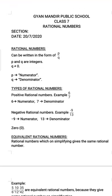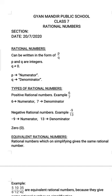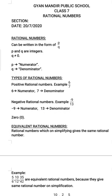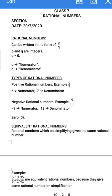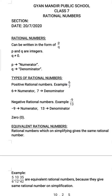Coming to the types of rational numbers — fractions and rational numbers are similar but fractions are only positive, as fractions deal with counting. But rational numbers deal with different directions — they can be negative as well as positive, and obviously 0 will come in every category except natural numbers.